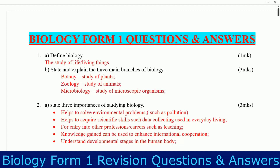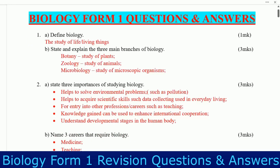Let us go straight to the first question. You are told: define biology. Remember this is Form One. Biology is the study of life, or the study of living things. Part B: state and explain the three main branches of biology. The three main branches are: botany — the study of plants; zoology — the study of animals; and microbiology — the study of microscopic organisms.